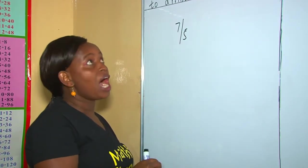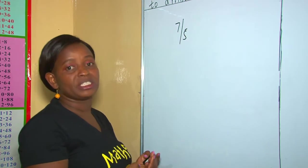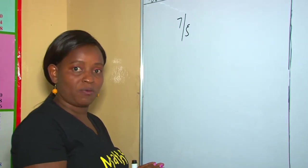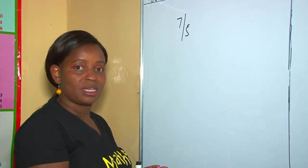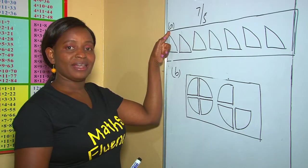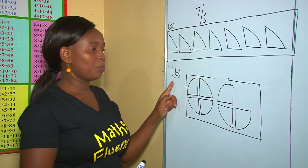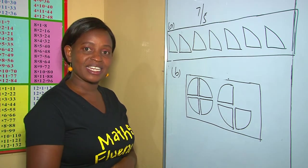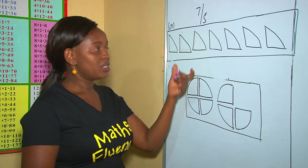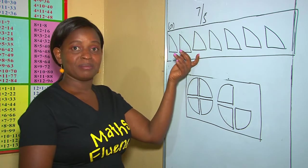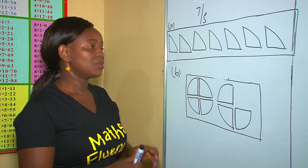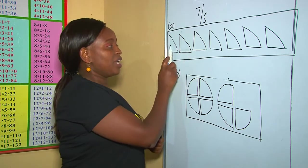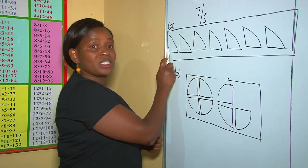Now, how do we change improper fractions into mixed fractions? There's question A and question B. How many quarters are in each diagram? So, as you can see, these are quarters.